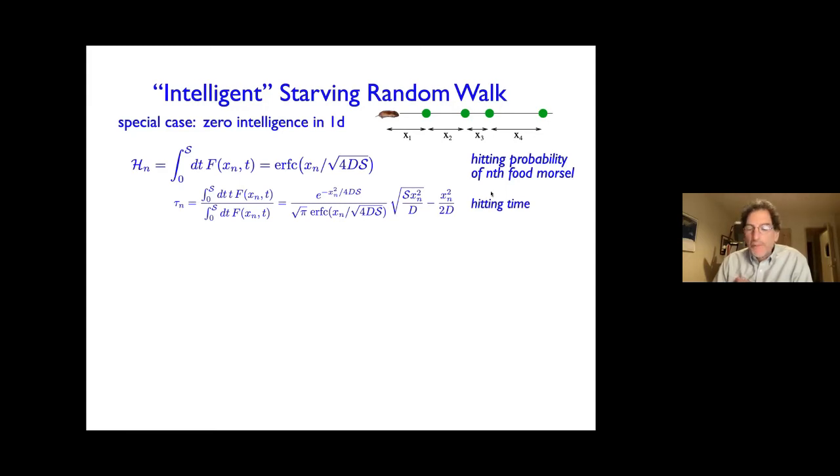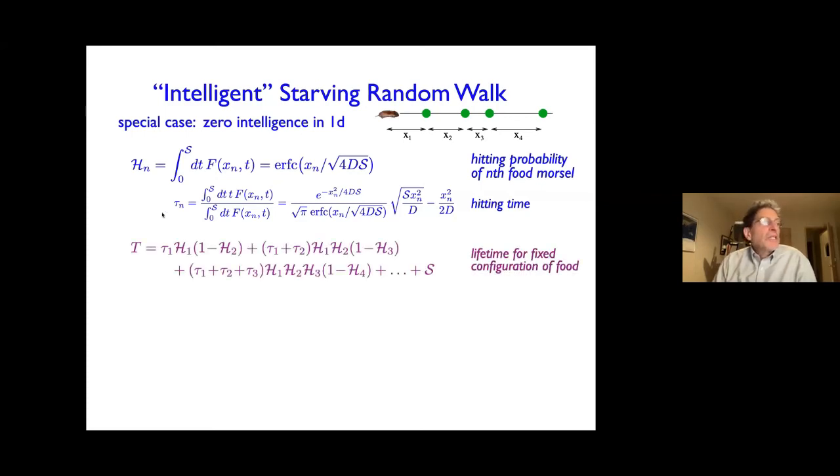And from this, you can compute the time that's going to take to reach this first morsel of food, if you're actually going to get there. So here's the hitting time. And then the next thing is that once we've figured out how to find the first morsel of food, we want to find the next morsel of food, and we can then compute for a given configuration of food, how long does it take or how long does he live. So for example, this forager reaches the first unit of food with a probability h1, it takes a time tau1 to get there, and doesn't get to this next morsel of food. So there's a 1 minus h2 for not getting to the next morsel of food.